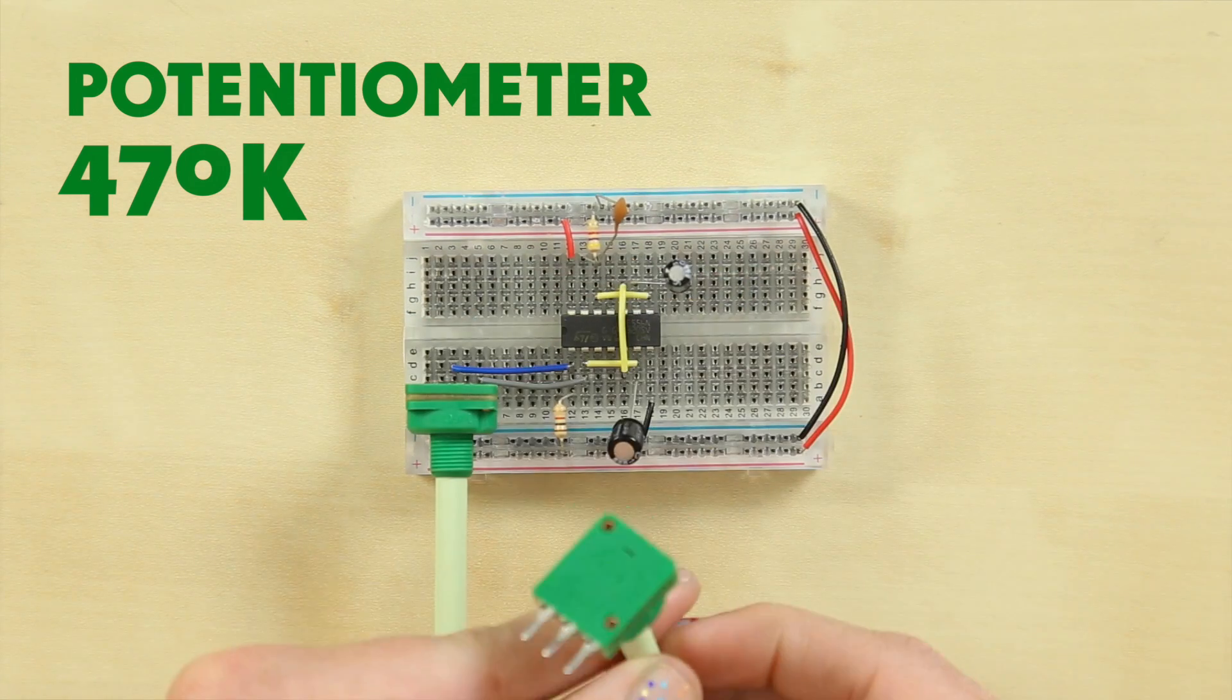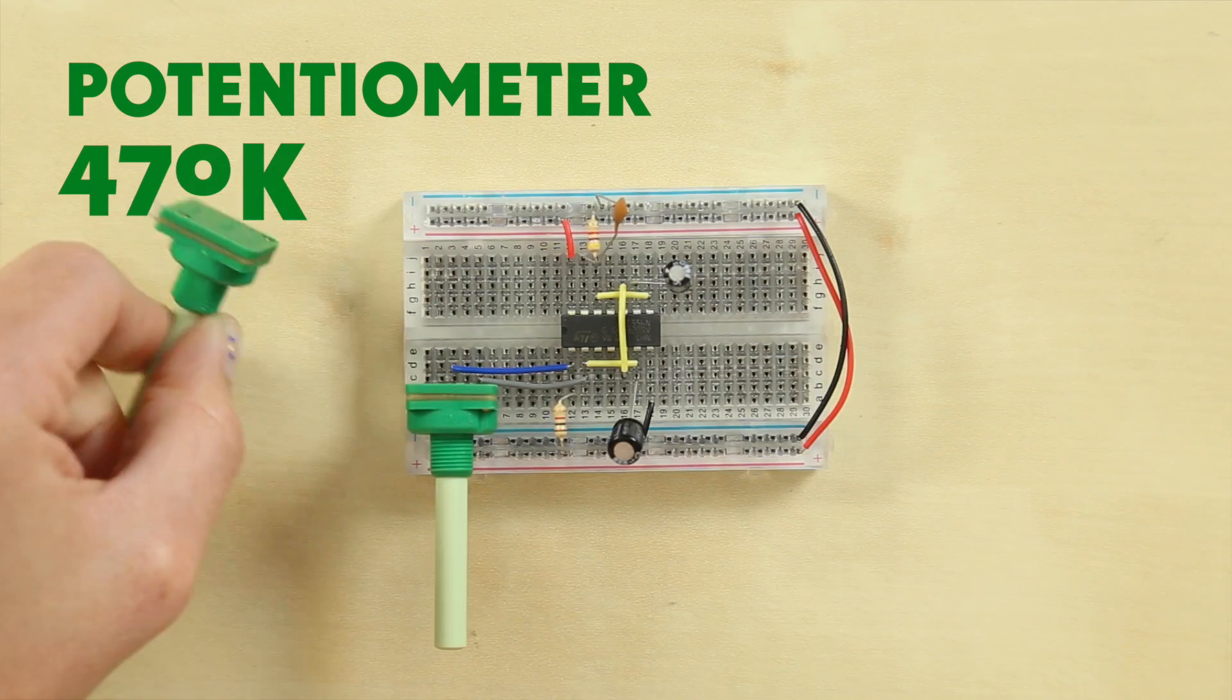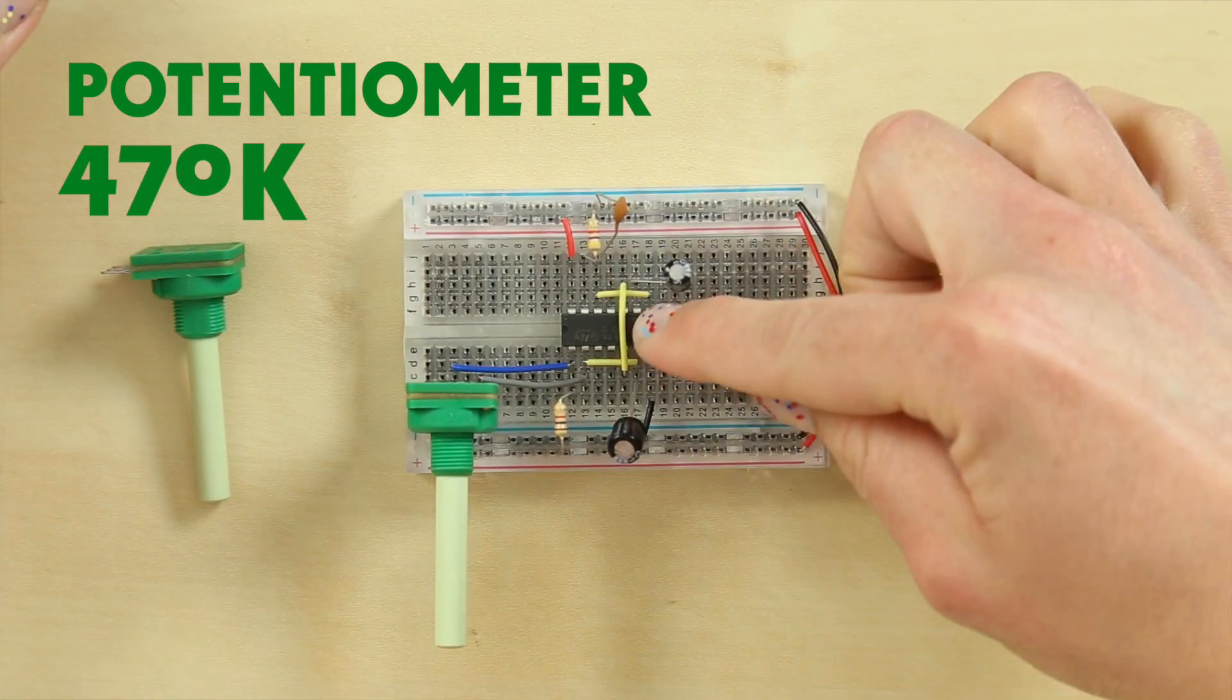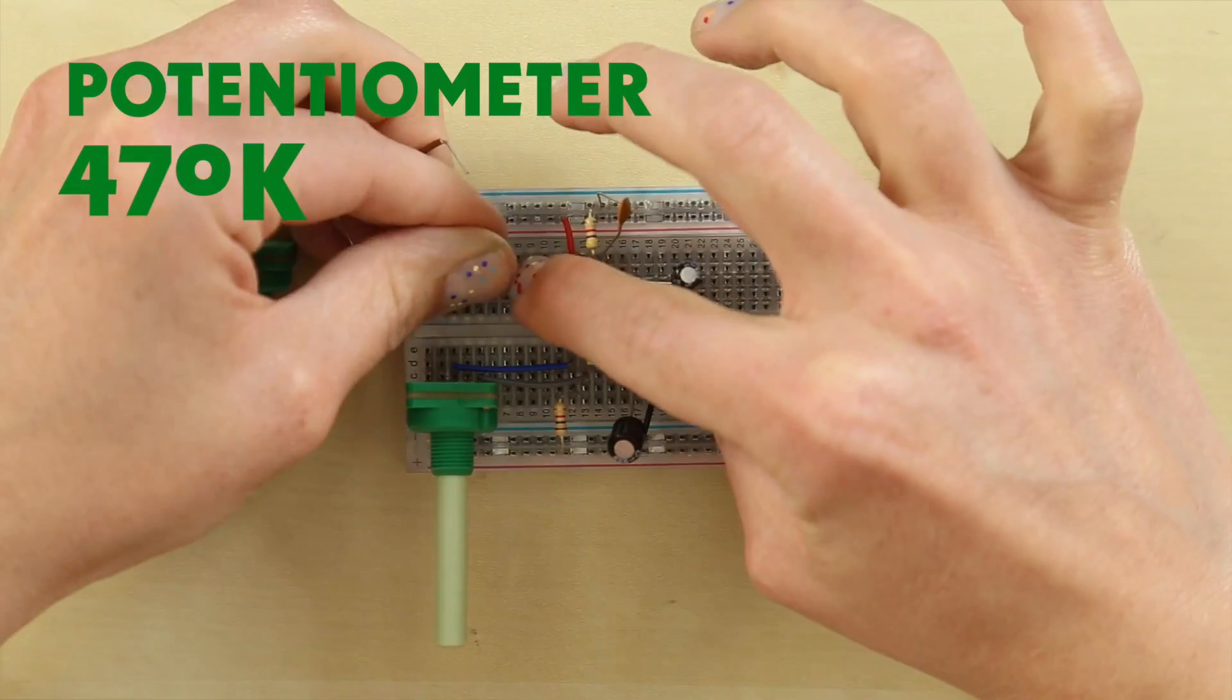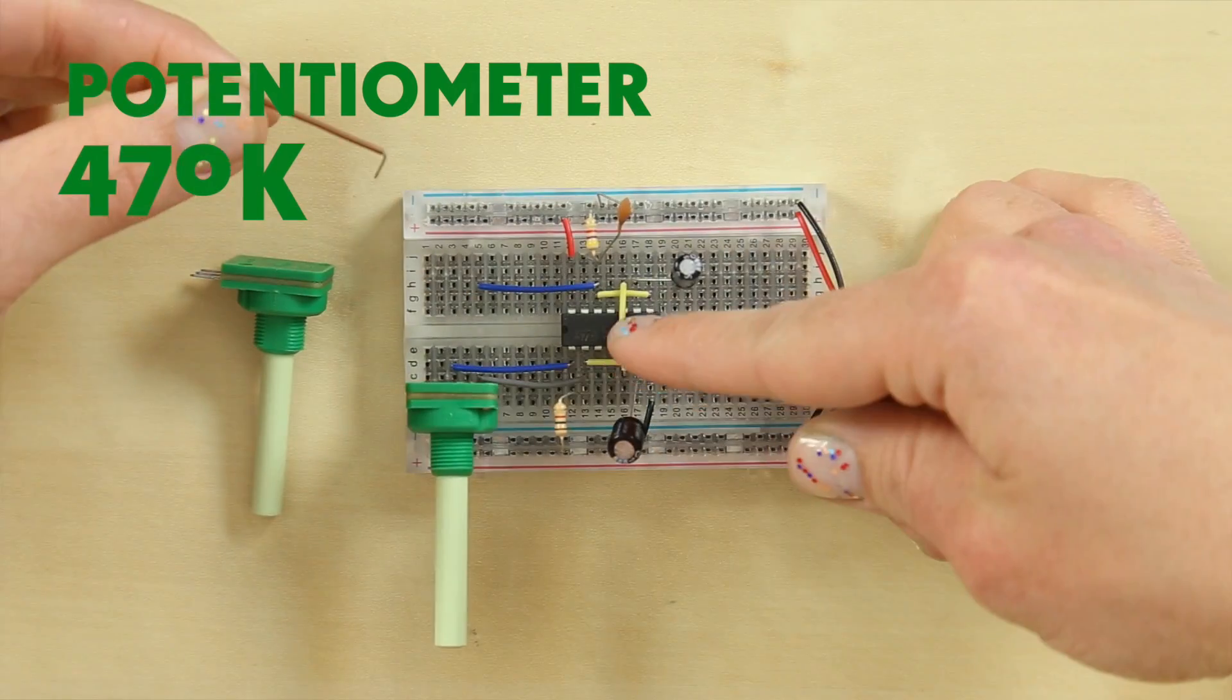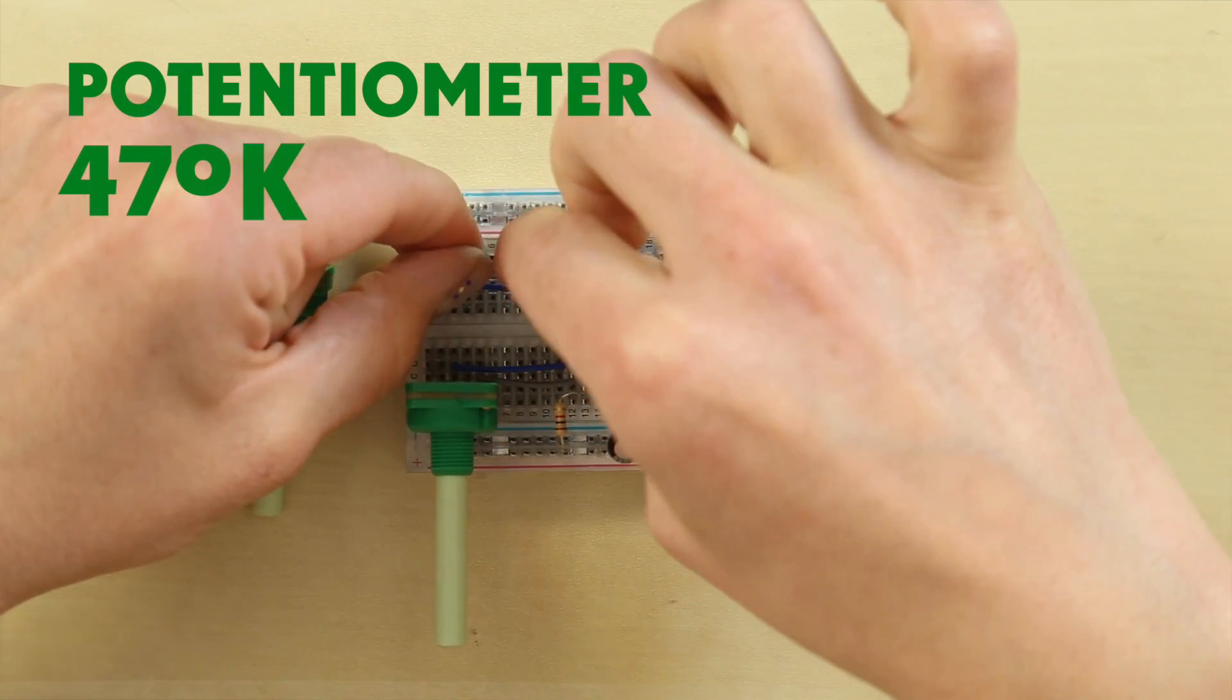Now we're going to connect your second 470K potentiometer. Again we'll need more jumper wires. Take one blue jumper wire and one brown jumper wire. The blue jumper wire is going to connect pin 12 of your IC to row 5 of your board. This should be in a straight line down column A. Now take your brown jumper wire and use it to connect pin 13 to row 3. And this is in a straight line down column I.